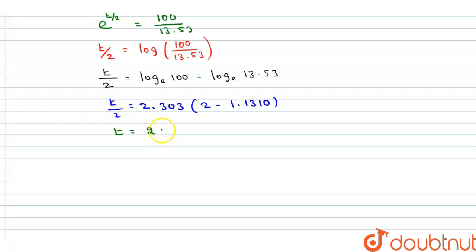Therefore, 2 into (2.303 into 2 minus 1.1310).